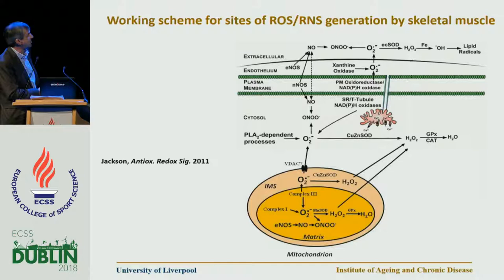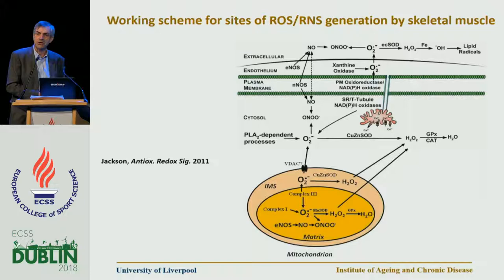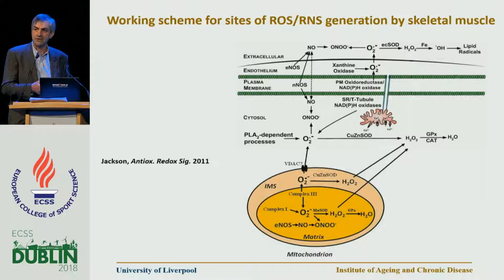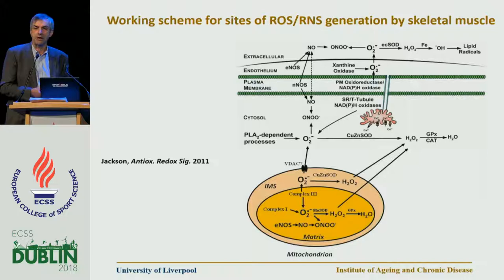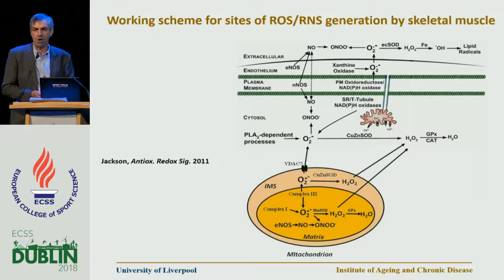This is an updated version of the slide that Scott showed a moment ago. One of the big issues in this area has been that we've identified potential sources of superoxide generation and hydrogen peroxide generation during contractile activity, but moving from potential to what are the key sources has been a bit of a problem. The major issue has been around whether it's generation in the mitochondria or generation in other parts of the cell such as around the plasma membrane.